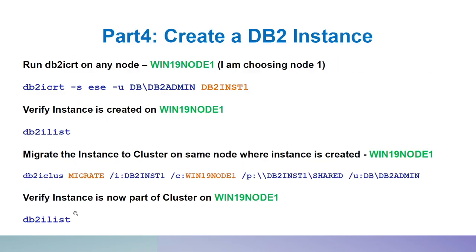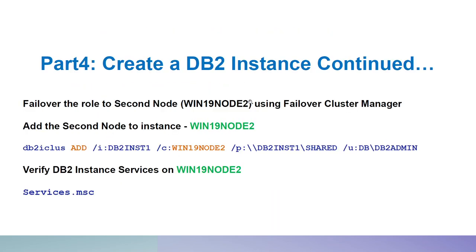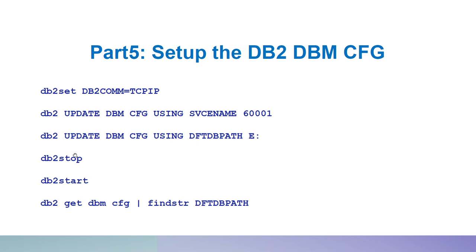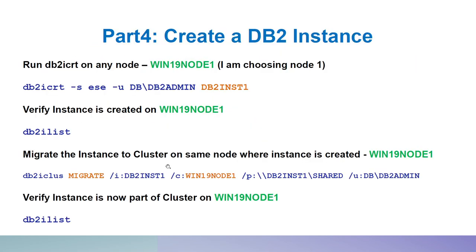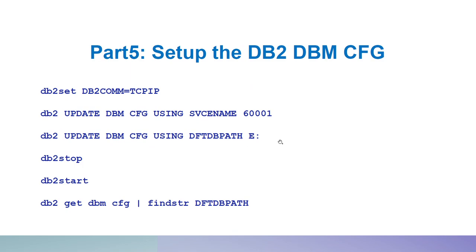On the second node, move the role to Node 2 and use db2iclass add — you do NOT create the instance again on the second node. On Node 1 we used the migrate command; on Node 2 we use the add command. Then set parameters like DBM service name and default DB path — these are normal parameters you configure during DB2 setup. The default DB path should point to the shared file system location.